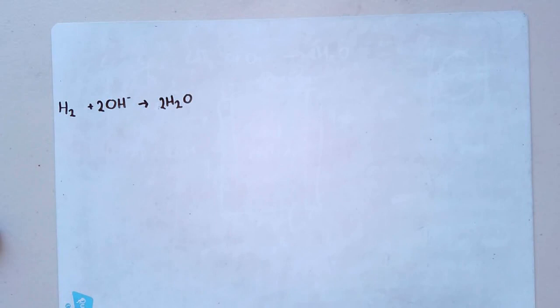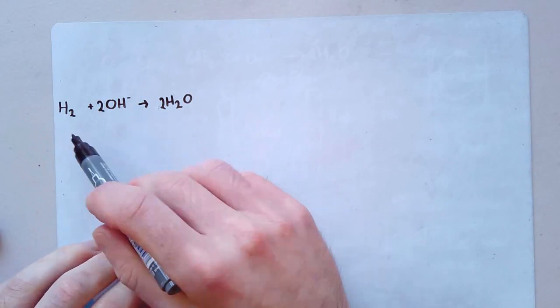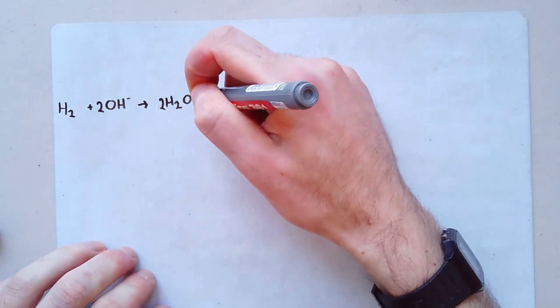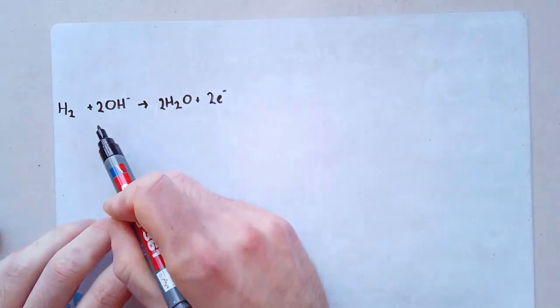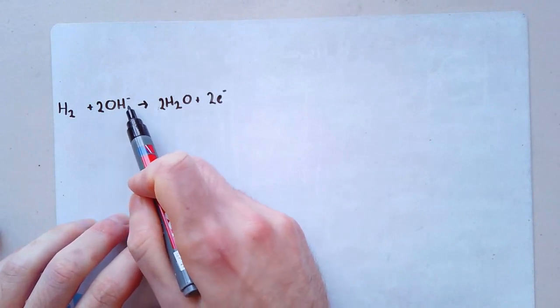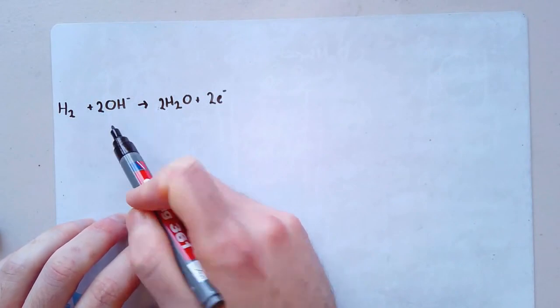When we did half equations, we looked at how actually electrons can be moving around in all of this process. Essentially, on this side, you've got too many electrons. That's where the negative charge are, you've got loads of electrons. And this side, they've got to be there as well. Two E minuses over here. Because I've got two OH minuses, each of those OH minuses has one extra electron. So if I've got two OH minuses, and each OH minus has one electron, I've got two electrons in total.